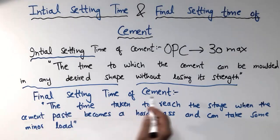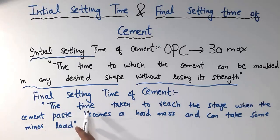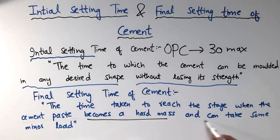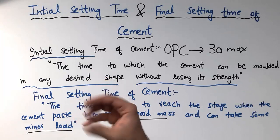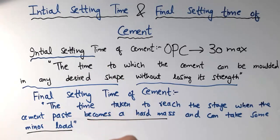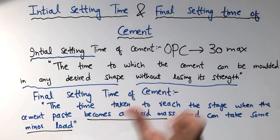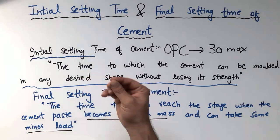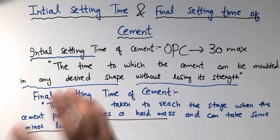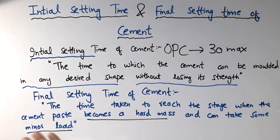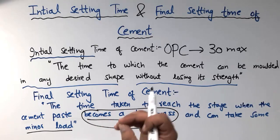The final setting time of the cement is the time taken to reach the stage when the cement paste becomes a hard mass and can take some minor load. For example, a person can now move on the floor slab or on the beam. At this point, the concrete shape cannot be moulded or changed into another shape as in the initial setting time, because the cement has become a hardened mass and has gained some strength.